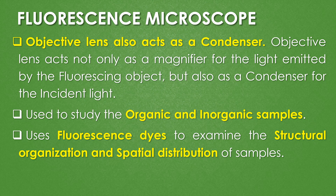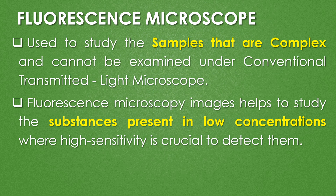The fluorescence microscope is used to study organic and inorganic samples. It also uses fluorescence dyes to examine the structural organization and spatial distribution of samples. It is used to study samples that are complex and cannot be examined under normal light microscopes, and it helps study substances present in lower concentrations where high sensitivity is crucial to detect them.